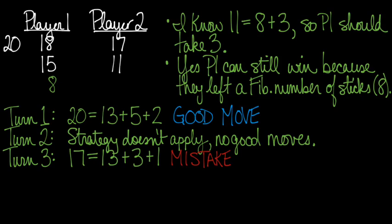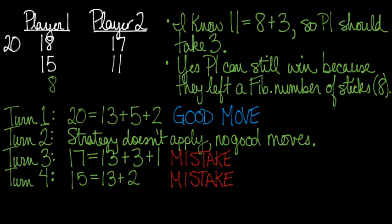Like, in other words, by taking two sticks instead of one, player two could have beaten player one. That was a really risky thing for player one to do. And in the fourth turn, there's 15 sticks left on the table. That's 13+2. So player two, if player two wants to take control of the game and win, they should pick two sticks up off the table. But they took four. So player two also screwed up.